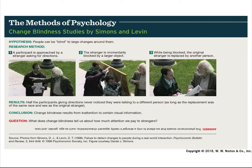Another example of change blindness is by the same researcher, Daniel Simons. The hypothesis is that people can be blind to large changes around them. A participant is approached by a stranger asking for directions. The stranger is momentarily blocked by a large object being carried by two people as they go by. While being blocked, the original stranger is replaced by another person. The results were that half the participants giving directions never noticed they were talking to a different person, as long as the replacement was of the same race and sex as the original stranger. The conclusion was that change blindness results from inattention to certain visual information.